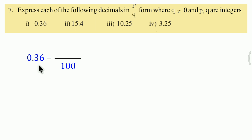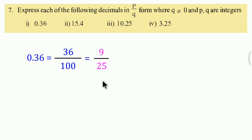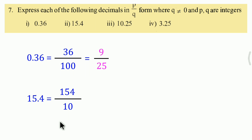Since there are 2 digits after the decimal point, the denominator will be 100. So 0.36 equals 36 upon 100. Now 36 and 100 can be simplified - divide both by 4, giving 9 upon 25. For 7.7: only a single digit after the decimal point, so denominator is 10. That gives 77 upon 10, and after simplification 77 upon 5.